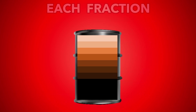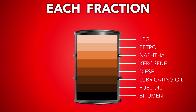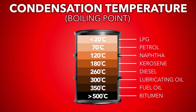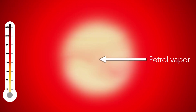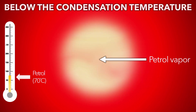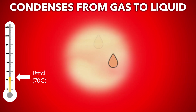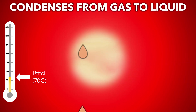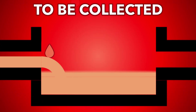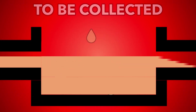Each fraction in crude oil has its own condensation temperature or boiling point. When the temperature falls below this point — for example, 70 degrees for petrol — the gas condenses back into a liquid. It can then be collected for use.